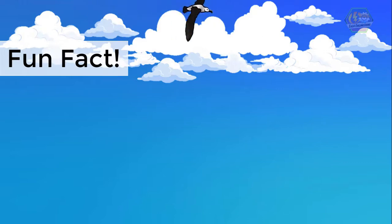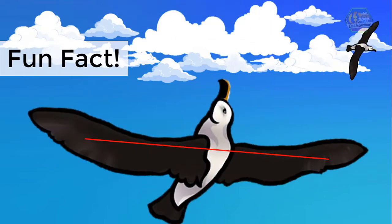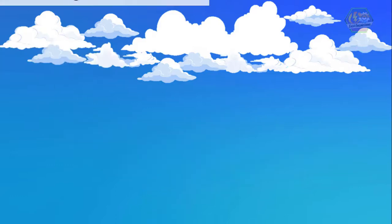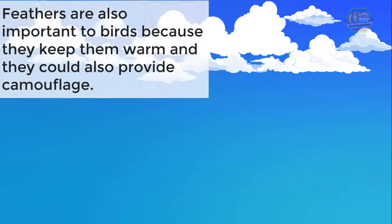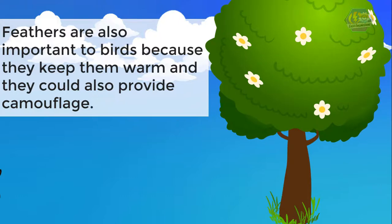Did you know that the wandering albatross has the biggest wingspan of all birds? It is so big that they could hide under one of its wing feathers. Feathers are also important to birds because they keep them warm and they could also provide camouflage.